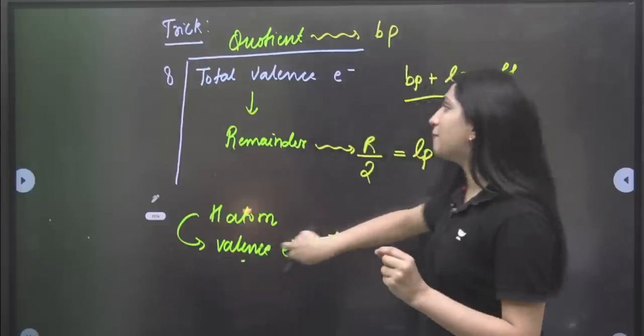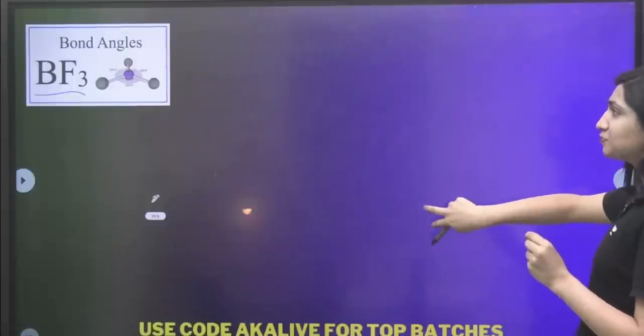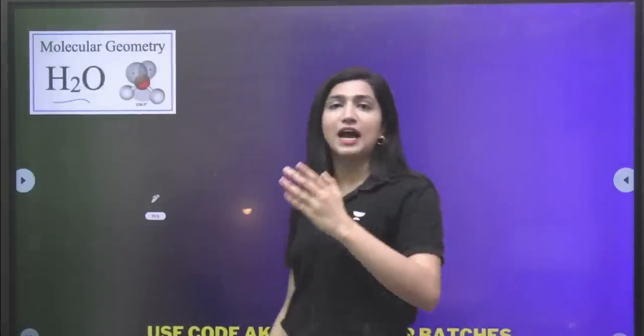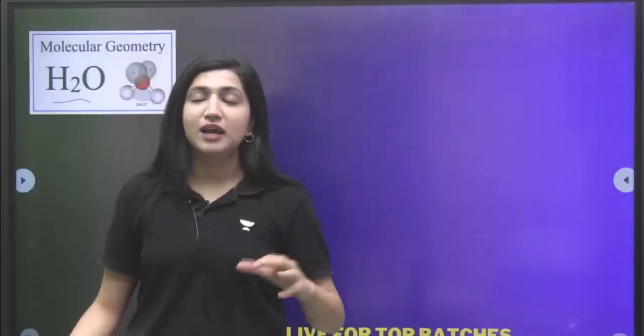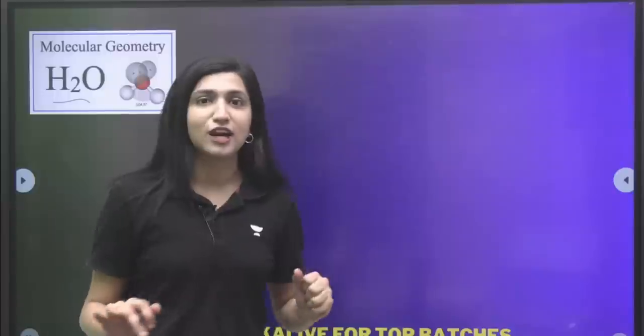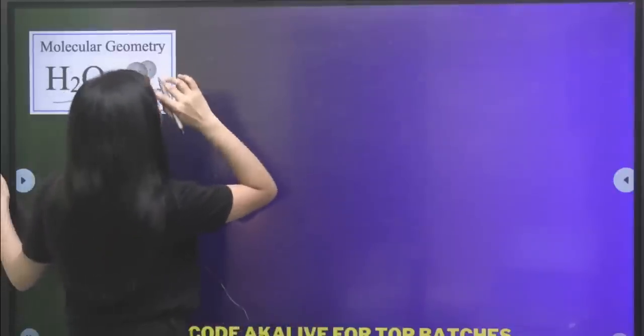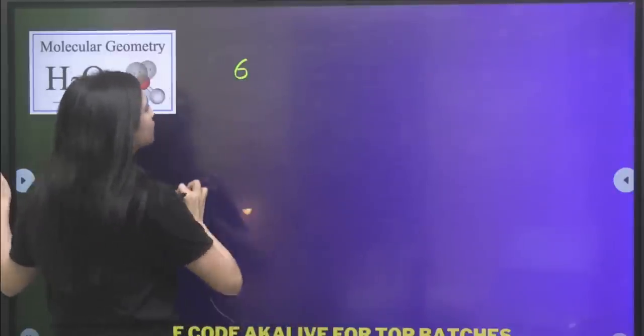So for example, we have water. First of all, we finish the hydrogen case. So water is the molecule. Tell me, how many valence electrons does hydrogen have? If we talk about oxygen, we have total 6 valence electrons. Then I told you that you have to consider 7 electrons for hydrogen.